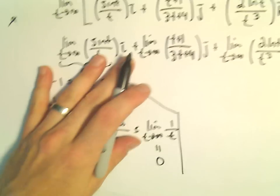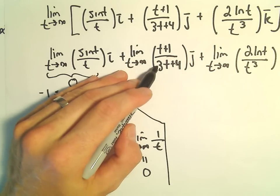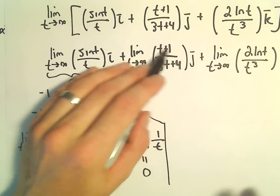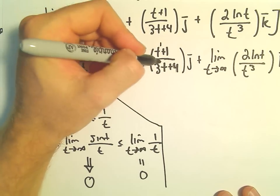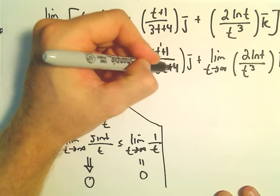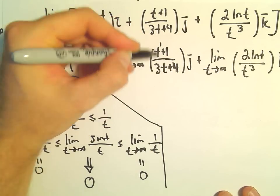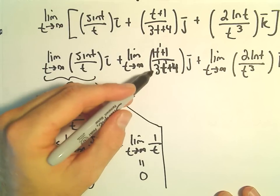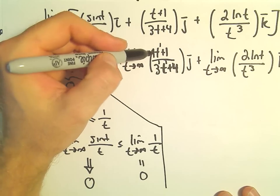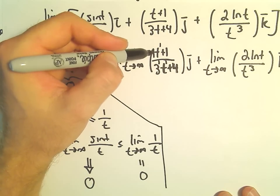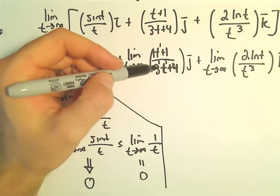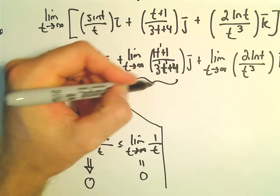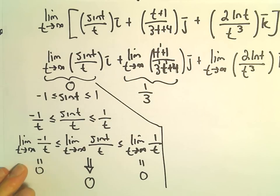As t goes to infinity of t plus 1 over 3t plus 4, that's going to be infinity over infinity. You can use L'Hôpital's rule, but since the degree of the numerator is the same as the degree of the denominator, we can just take the ratio of the leading coefficients. The coefficient in front of t in the numerator is 1, and in the denominator is 3, so this limit equals 1/3.